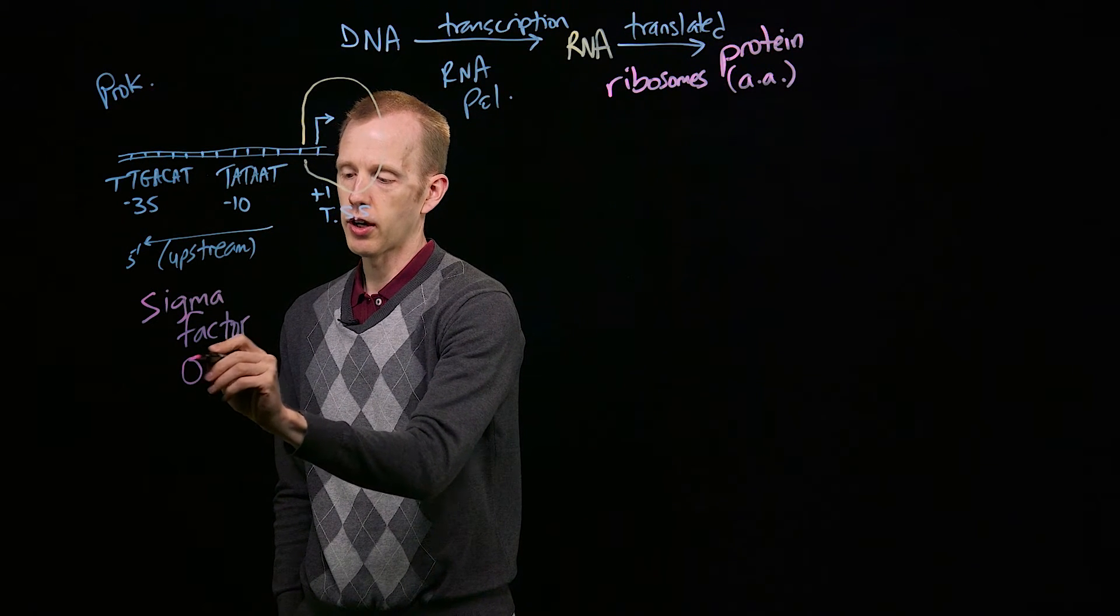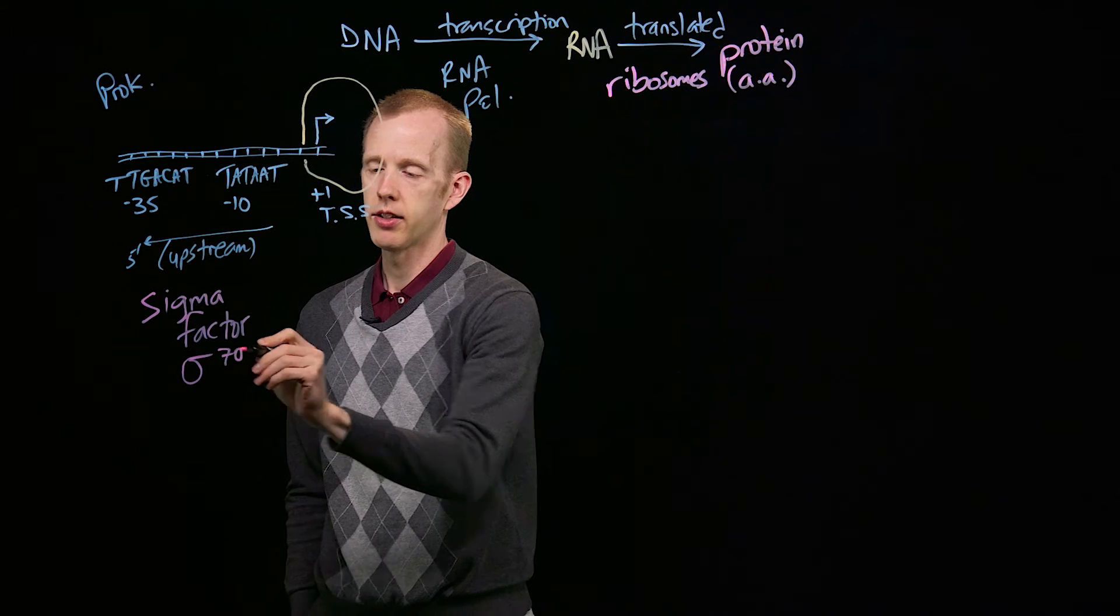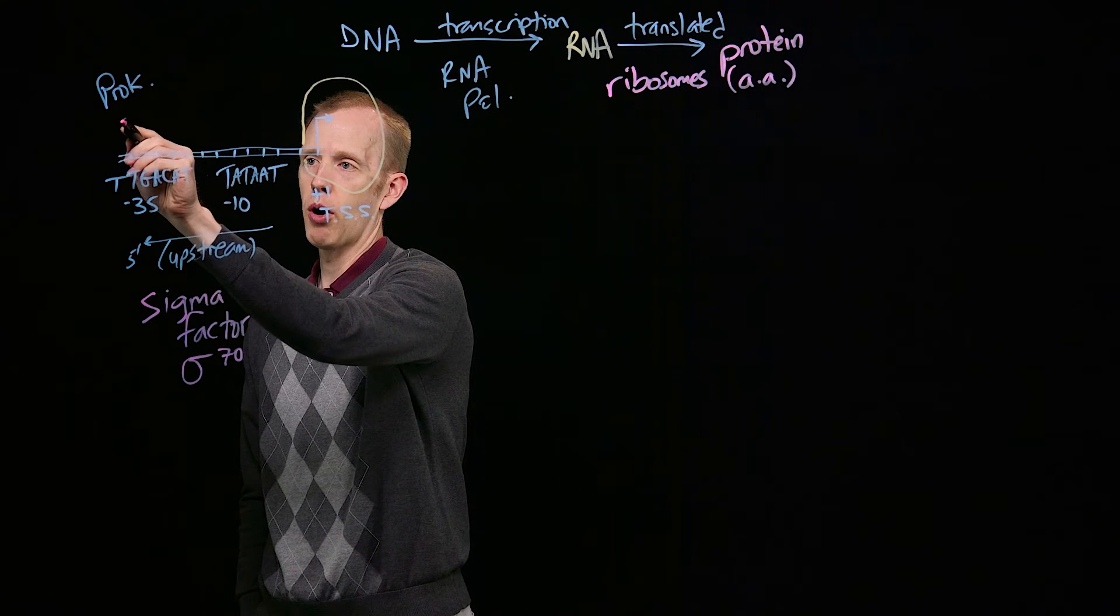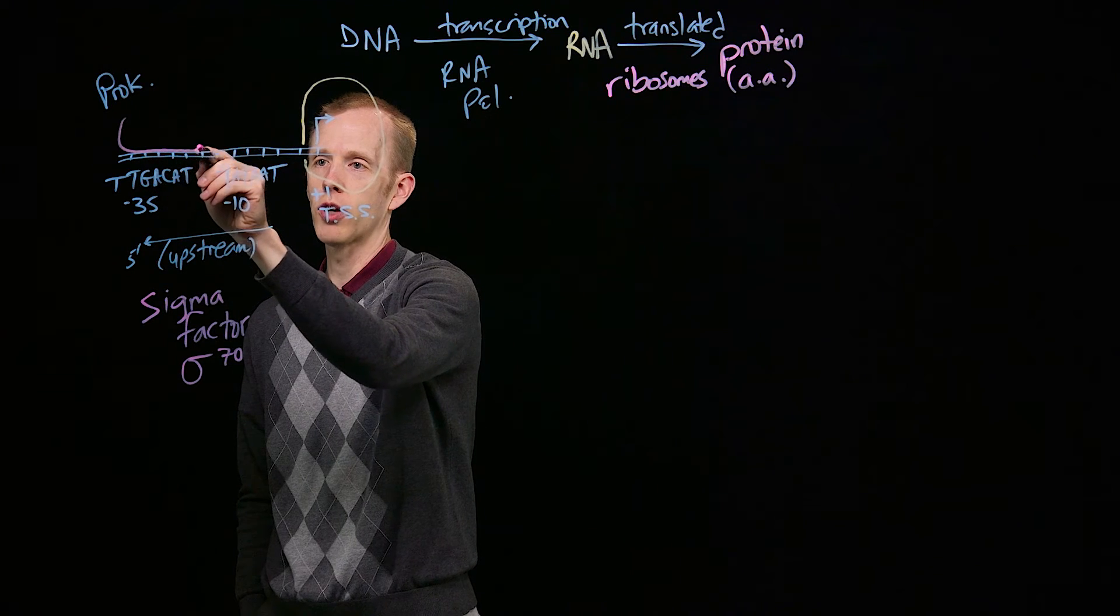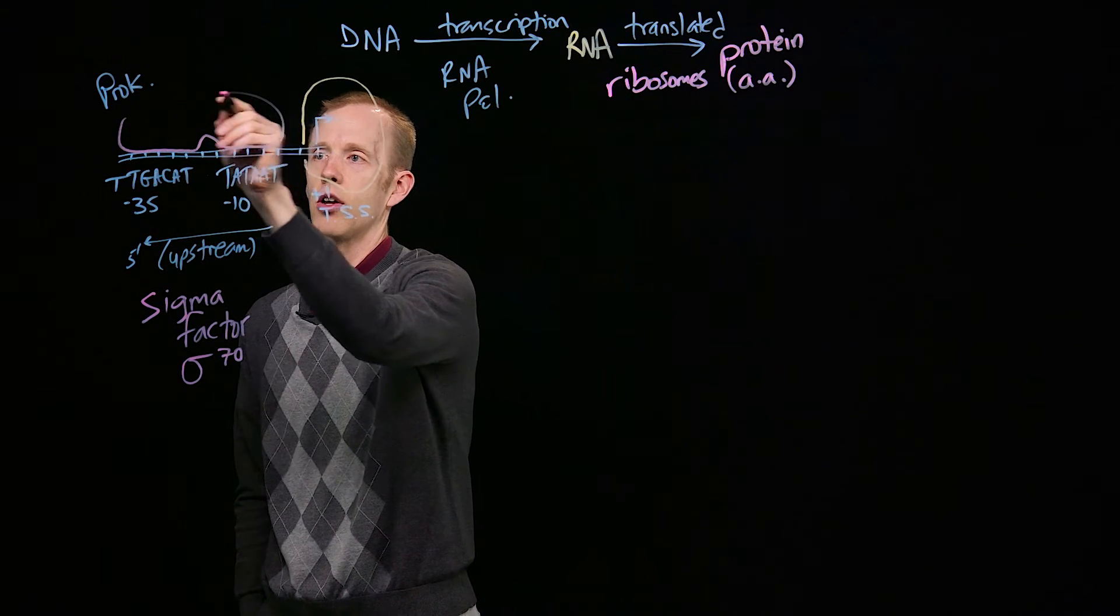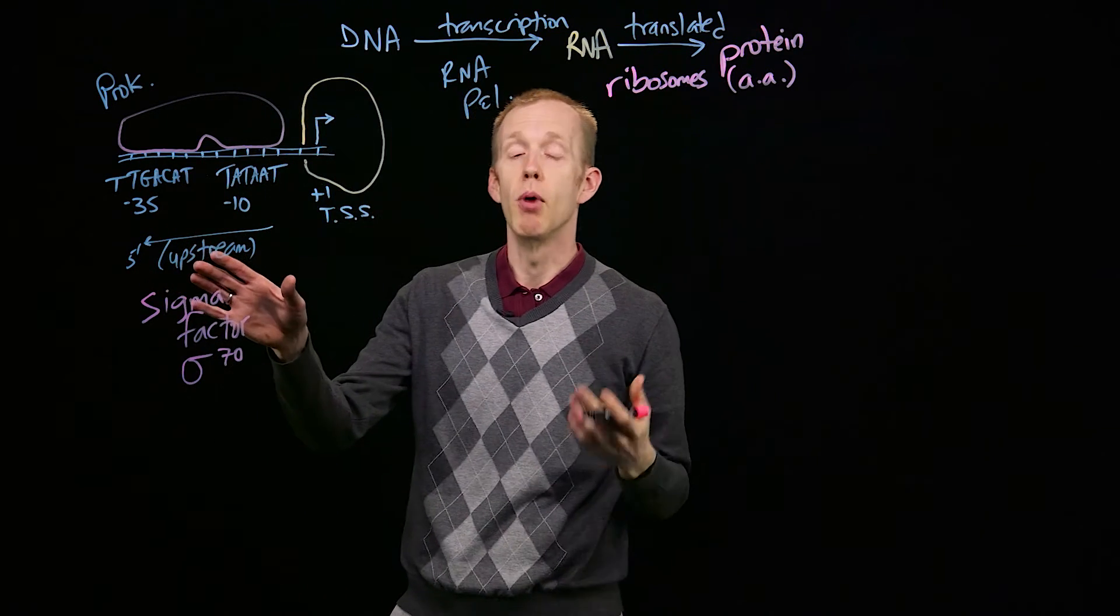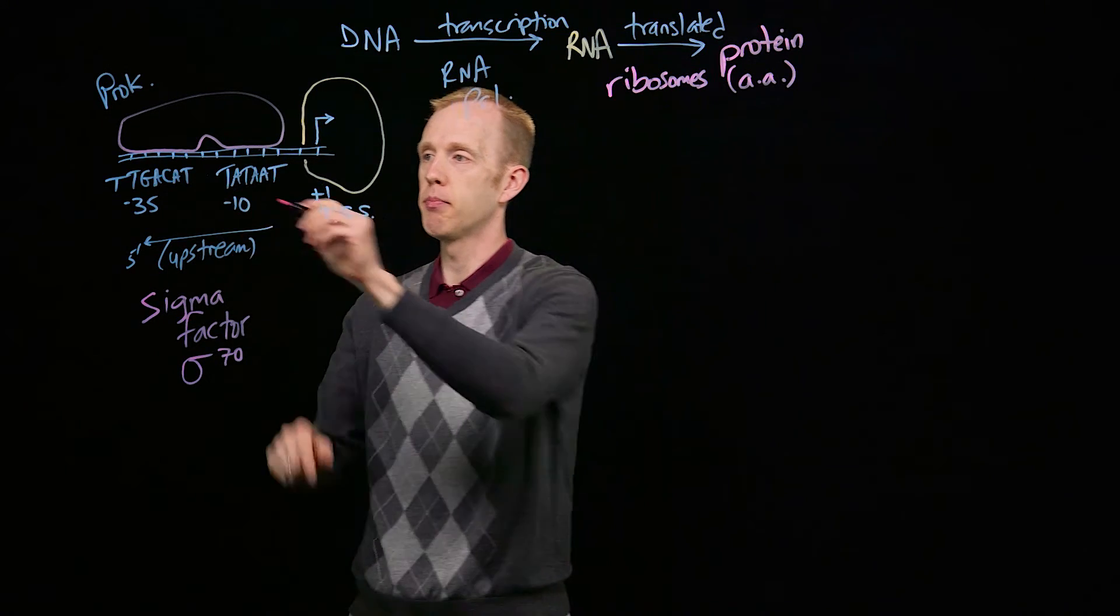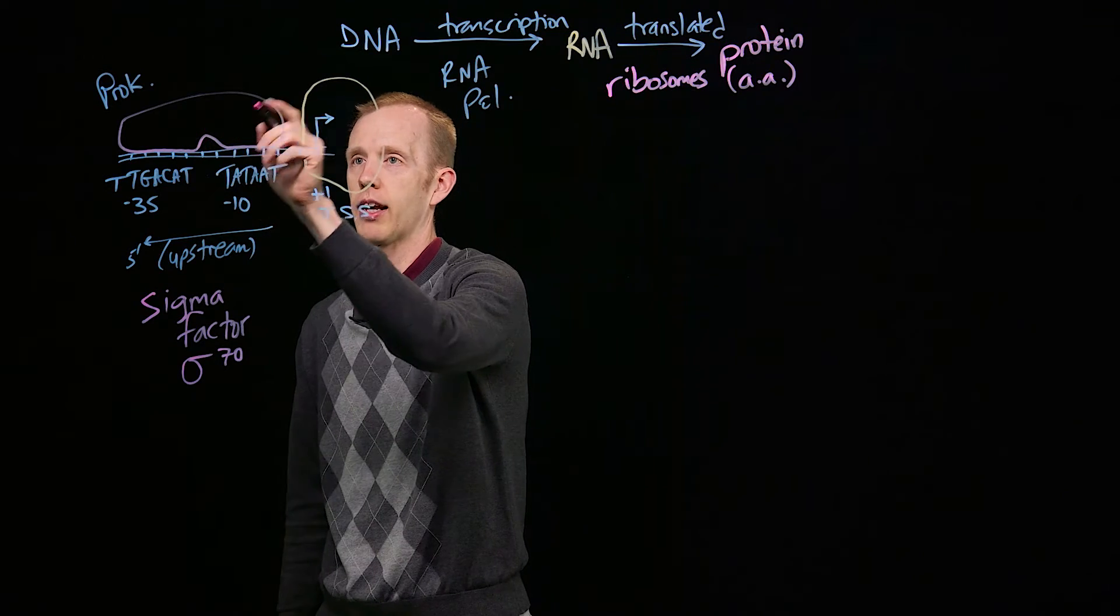And the sigma factor we're going to talk about today is called sigma-70. And it's a protein that has part of its amino acid structure recognizes those two motifs, or consensus sequences, these DNA sequences. It binds to those and recognizes them.